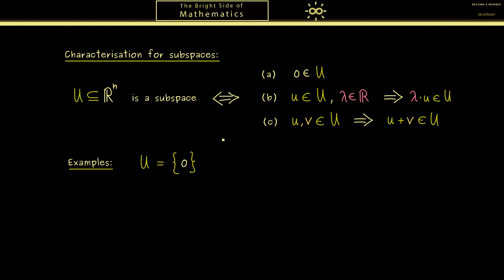And there you should see we can immediately check all the three properties here. The first one is immediately given. The second one means we scale the zero vector which results in a zero vector again. And the last one just says that we have zero vector plus zero vector. Hence we can conclude this one is a subspace. Okay then the other subspace where we already know it's a subspace is the whole space Rⁿ. There by definition we already know that scaling and adding are well defined operations. Therefore all the three properties are immediately fulfilled.